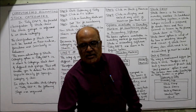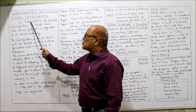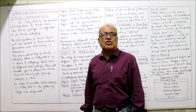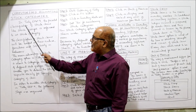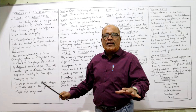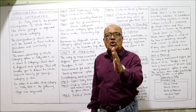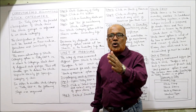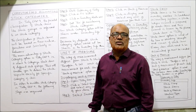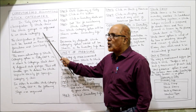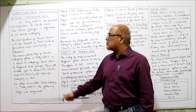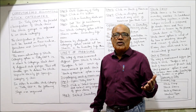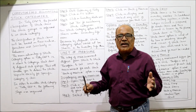Now I'll start the first topic: Stock Categories. In previous examinations, a theory question has been asked to explain stock category. In Tally ERP 9, there is a parallel classification of stock items and stock groups. This classification of stock items and stock groups is referred to as stock category. The classification of stock items is based on the nature, behavior, and functions of the items.